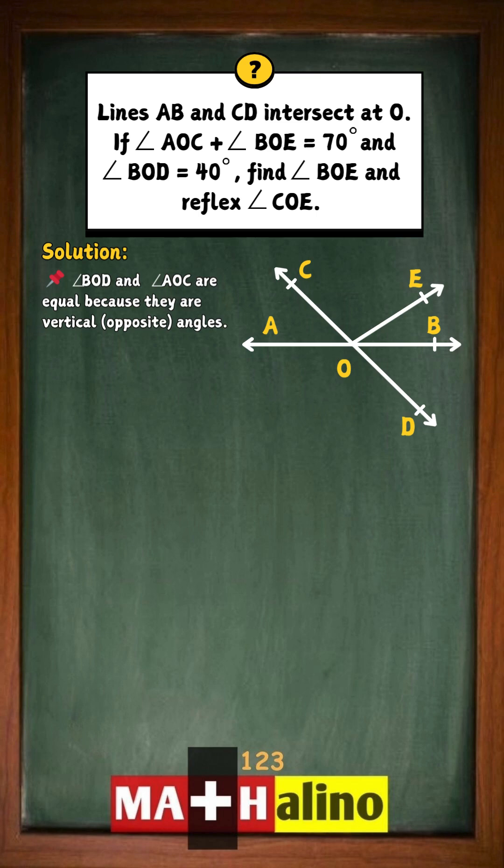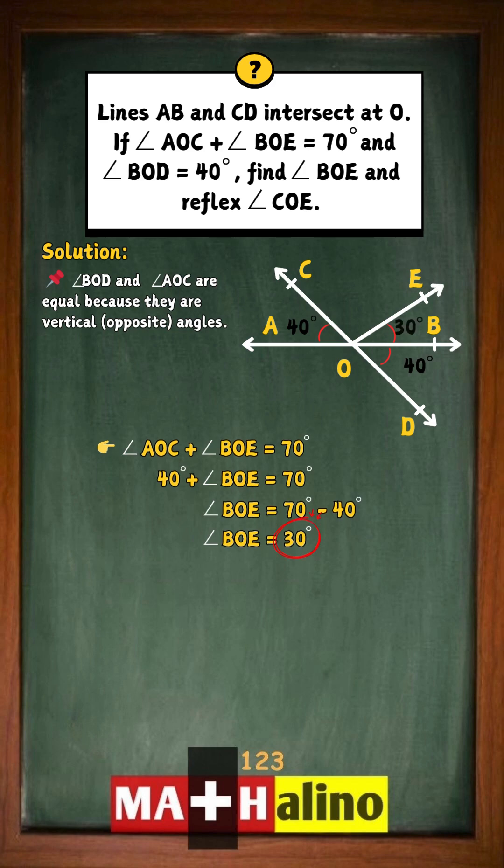Angles BOD and AOC are opposite, so each is 40 degrees. The problem says angle AOC plus angle BOE equals 70. Substituting the values, angle BOE measures 30 degrees.